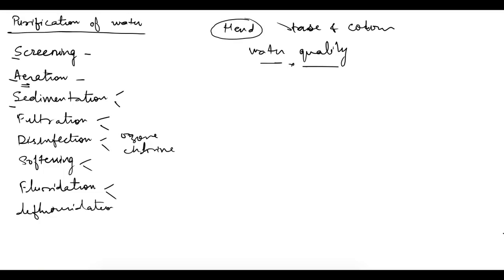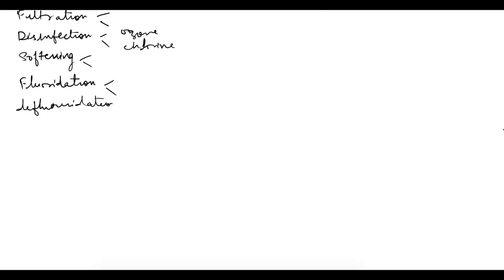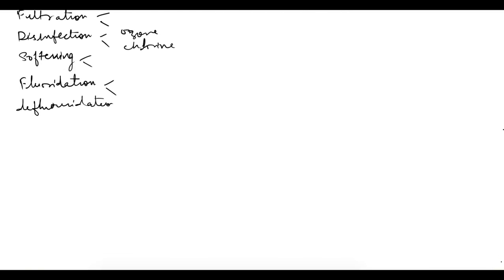First is screening. Screening is done if large objects like tree branches or major debris are present in the water, to remove them. There is not much to understand there, so we'll begin with sedimentation — first, plain sedimentation.